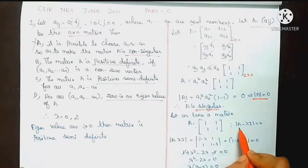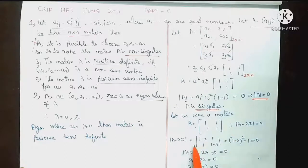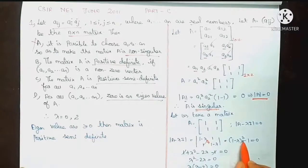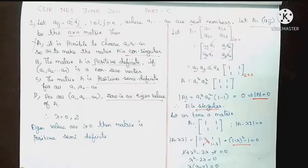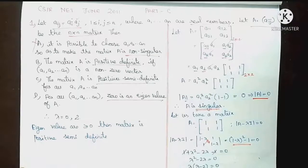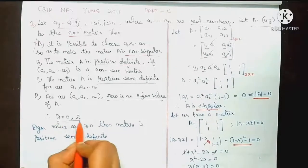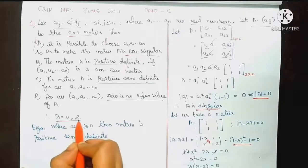Let's take the same matrix A. The eigenvalue is equal to 0 in the characteristic equation. We compute: (1 − λ)(1 − λ) − 1 = 0, which gives (1 − λ)² − 1 = 0. Evaluating: λ(λ − 2) = 0. So finally, lambda equal to 0 and 2.